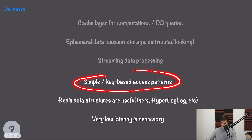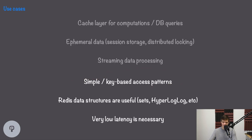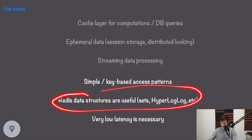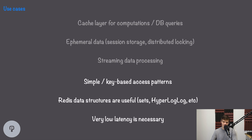Now that we understand how to persist non-ephemeral data in Redis, let's consider some additional use cases this opens up. Any really simple key-based access pattern is a great use case — something like a link shortener, where the only data we store is the shortened link mapping to the real link, can take advantage of Redis's speed and simplicity instead of a more complex database. Redis also supports interesting data structures such as sorted sets and HyperLogLog as values, which can make certain use cases much easier. An online leaderboard, for example, is a perfect use case for a sorted set.